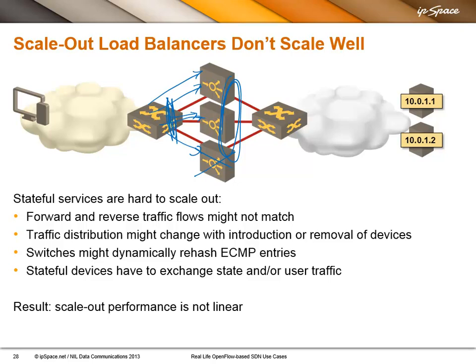There are two ways to do that. Option number one is that they actually share state, which is extremely chatty, so vendors are trying not to do that. What vendors are trying to do is: if the return traffic lands on the wrong device, they have an internal interconnect and send the packet to the right device, which then processes the packet. This means you have a lot of traffic going between these boxes, and the more boxes you have, the more traffic goes between them, with the result that scale-out performance is definitely far from being linear.